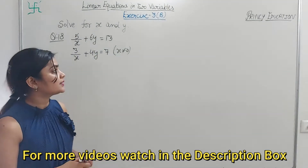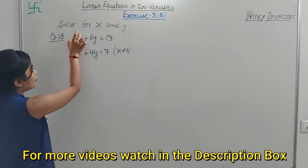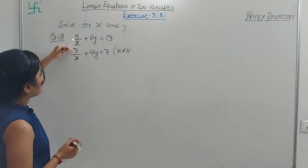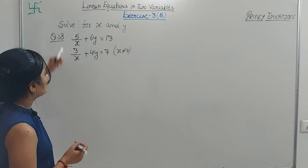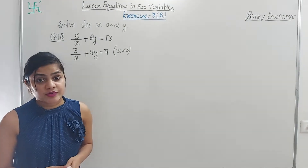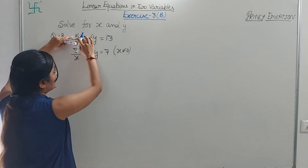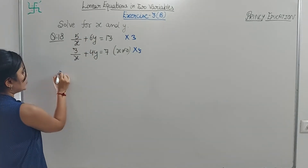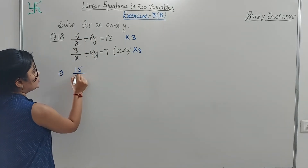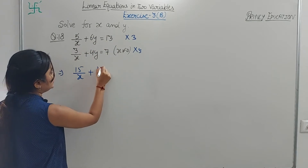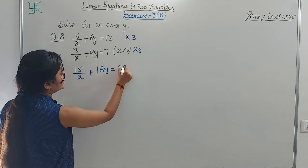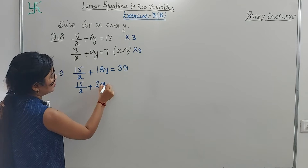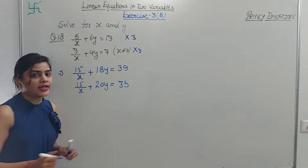Looking at 5/x and 3/x — the x is the same denominator in both. So we match the numerator coefficients: LCM of 5 and 3 is 15. Multiply equation 1 by 3: 15/x + 18y = 39. Multiply equation 2 by 5: 15/x + 20y = 35.